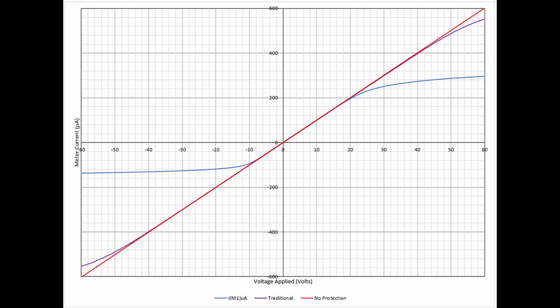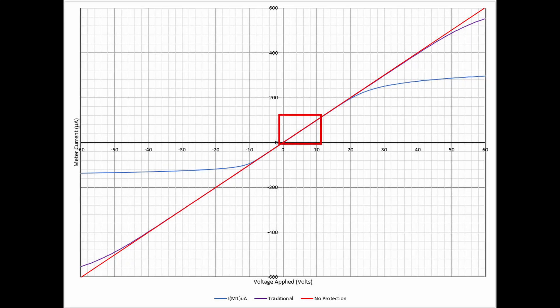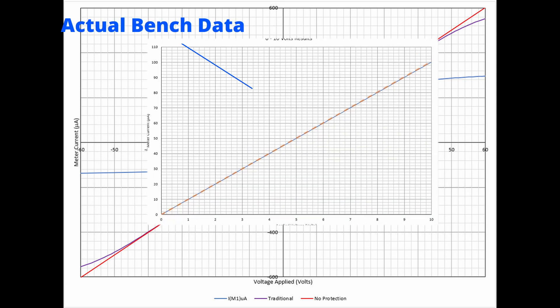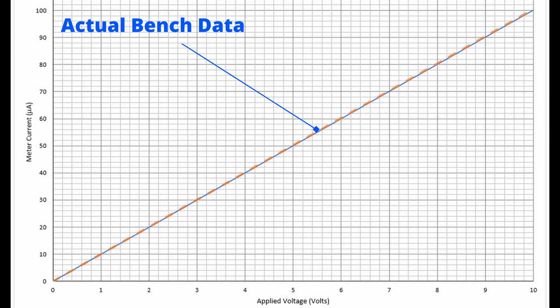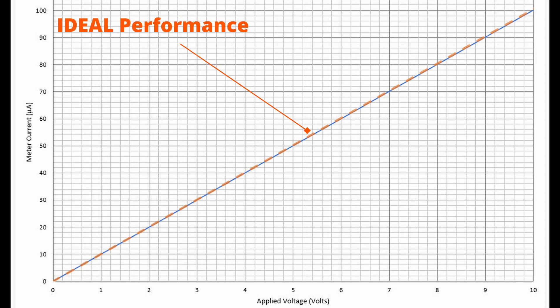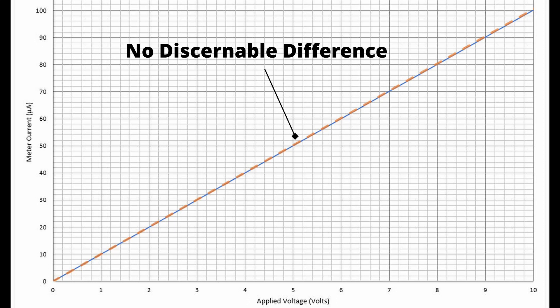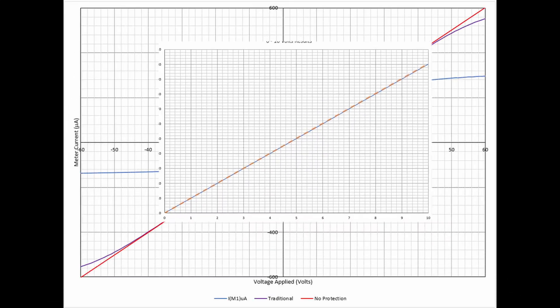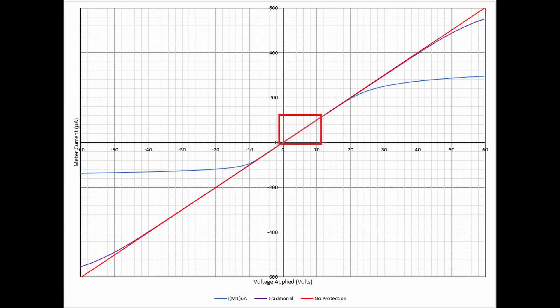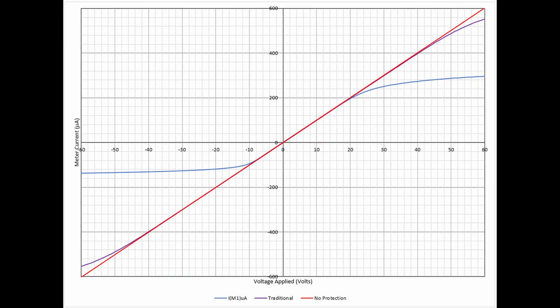However, a very important aspect of this is how the new protection topology affects the linearity and accuracy of the meter in the range of interest. This was designed to have a full scale reading of 10 volts. So we are interested in the region between 0 and 10 volts. The blue line is the actual performance of the meter with the new protection installed. The orange line is what we would expect if the meter were unaffected by the meter protection circuit. As you can see here, there is no discernible difference between the two. Thus, we not only have the improved meter protection, we also have not impacted the accuracy or linearity of the meter with that protection.